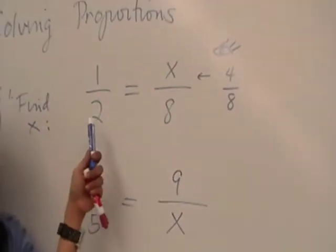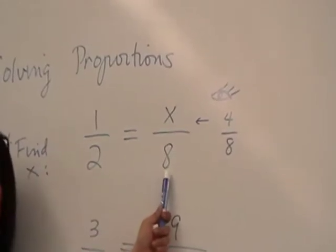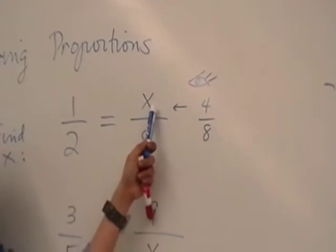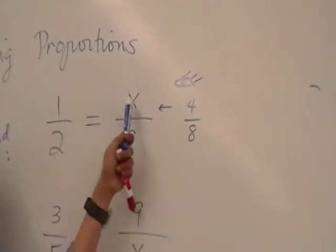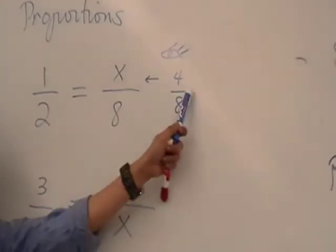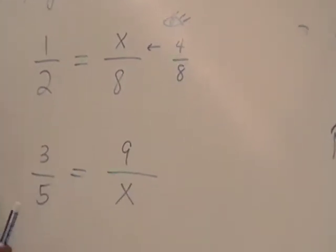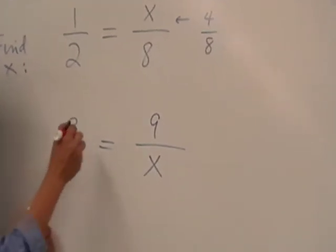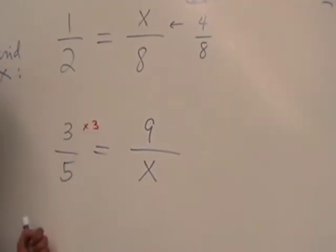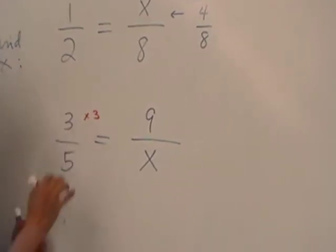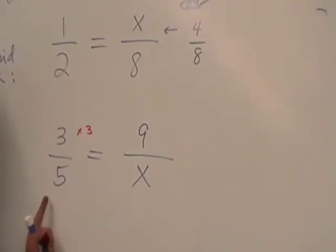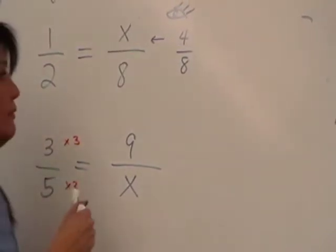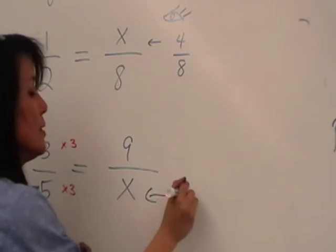So like in the first example, how did two become an eight? Two times four is eight. Therefore, you have to multiply this by four. So that's the eyeballing that happened. One times four is four. So one way you can do it is to look at this. Three became nine. How did three become a nine? You had to multiply by three. Therefore, if you multiply the numerator by three, you also have to multiply the denominator by three. So you get how much is your x? Fifteen. So you say that x has to be 15.